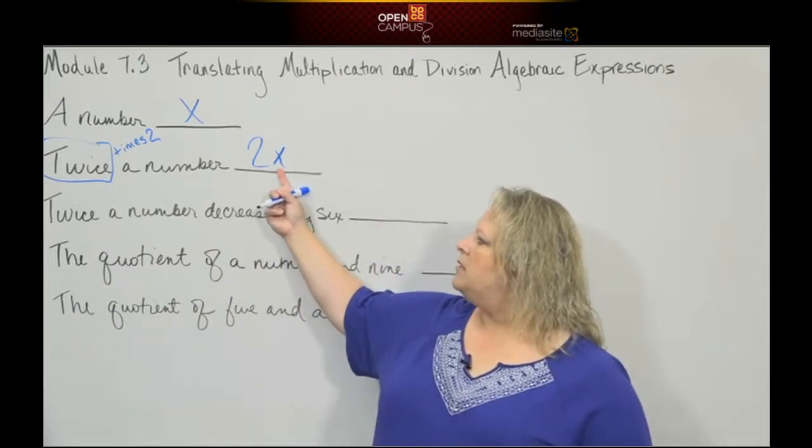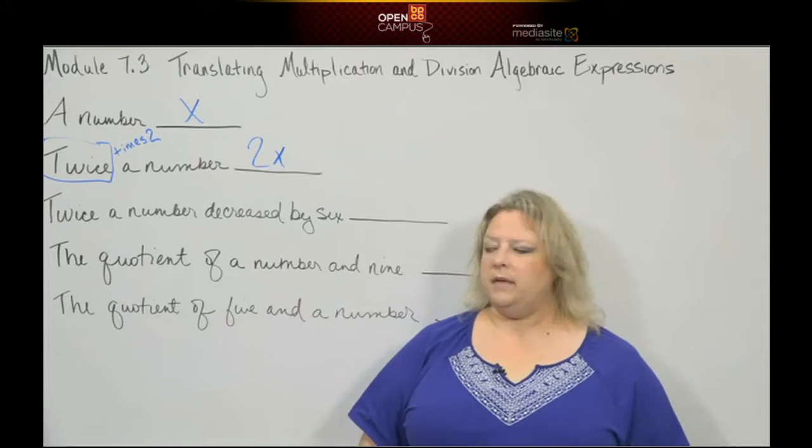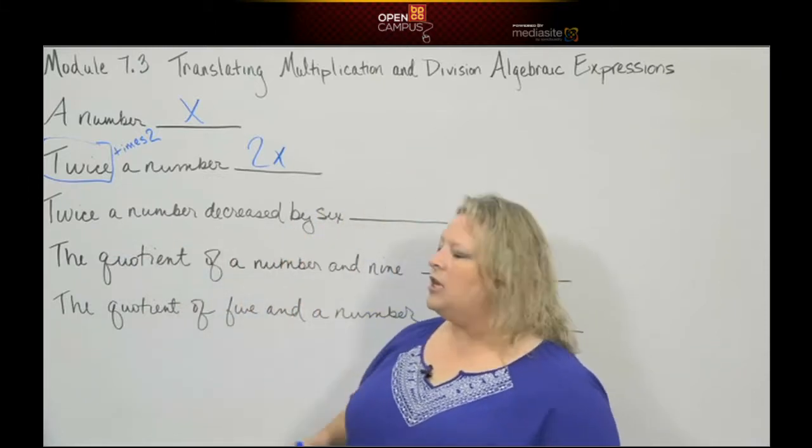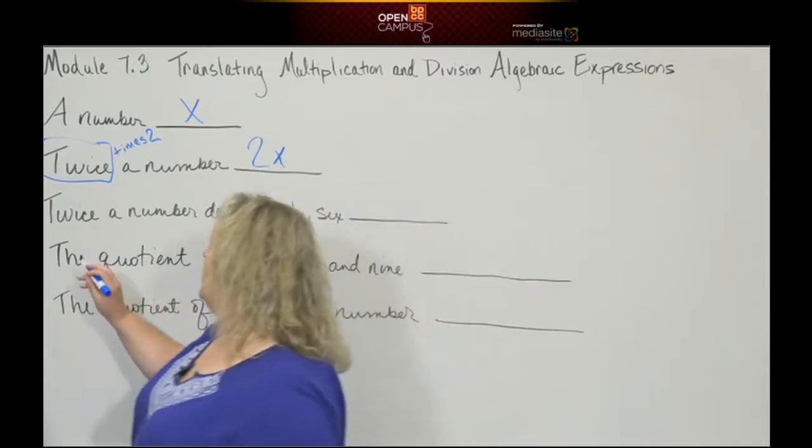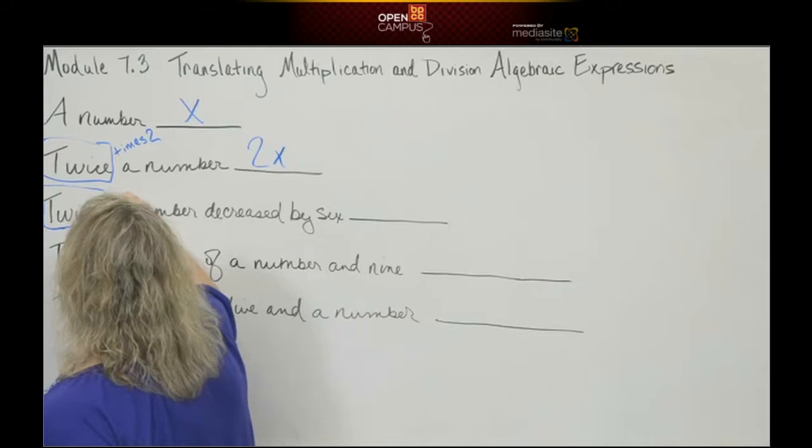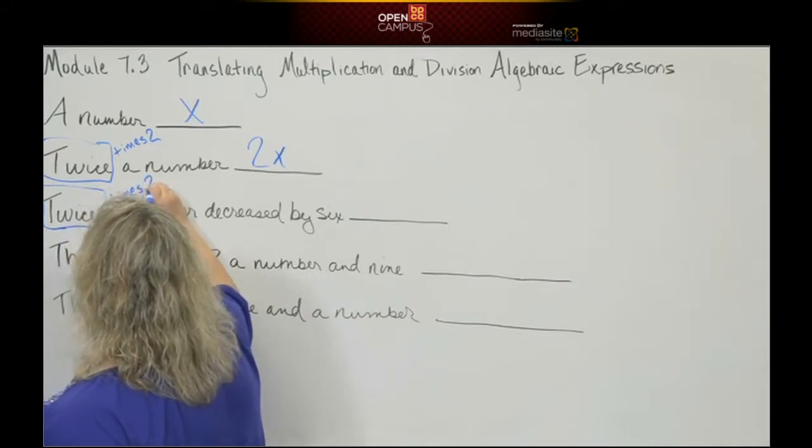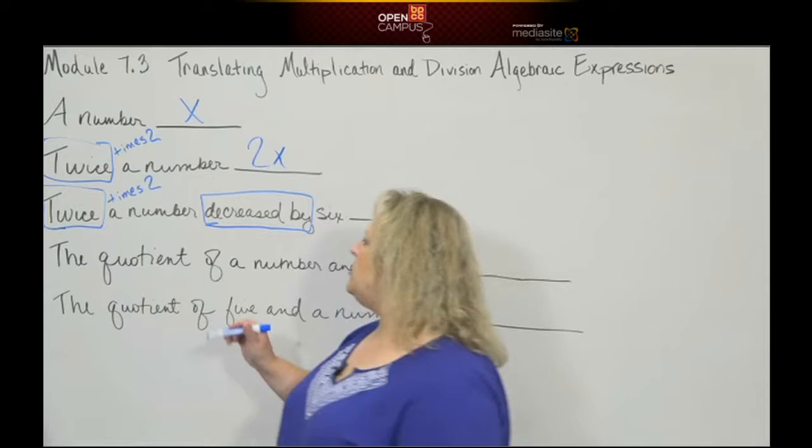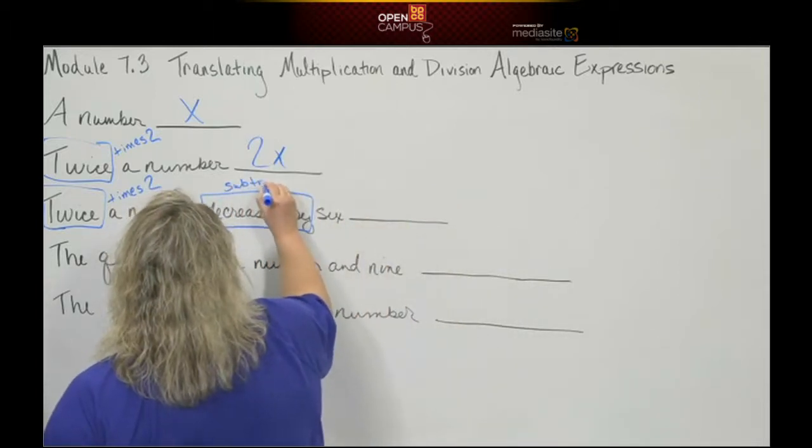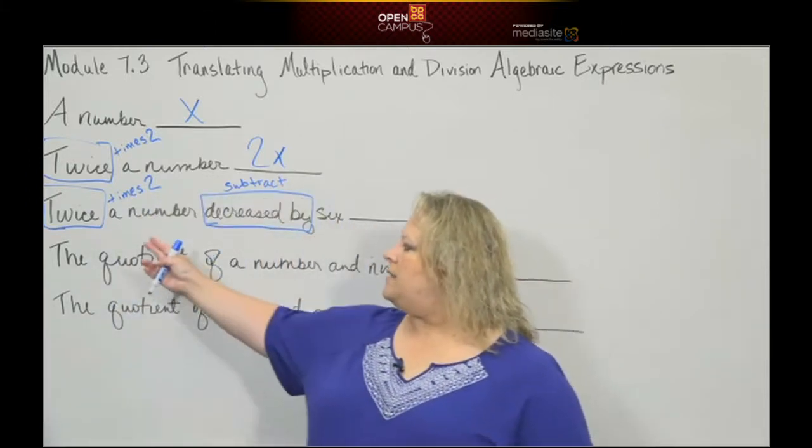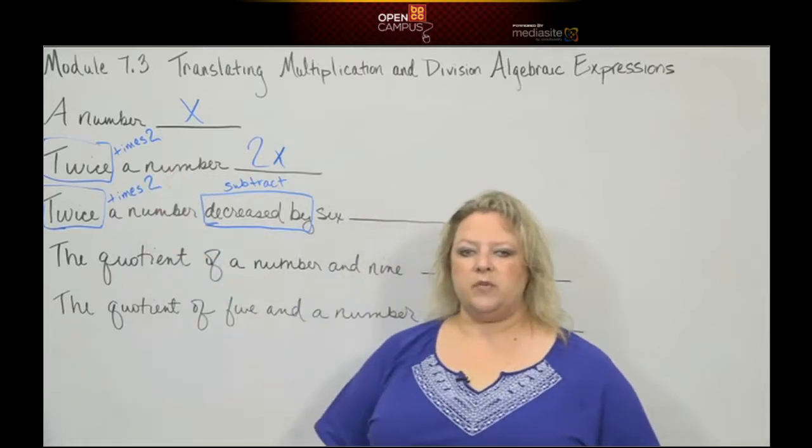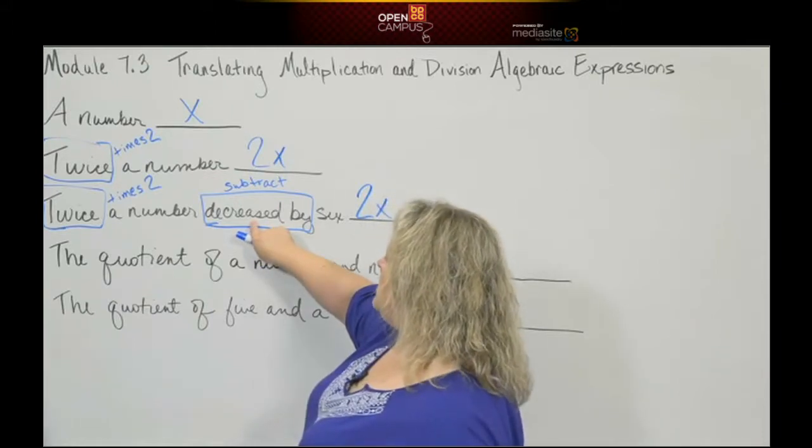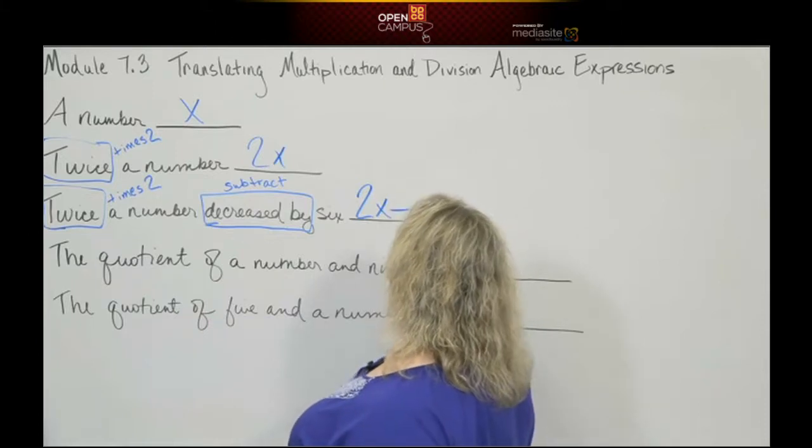Next we have twice a number decreased by 6. Here we have two operations in the same problem: twice a number means times 2, and decreased by means subtraction. We just wrote twice a number as 2x, so let's write that down and then decrease that by 6, which means subtract, take away 6.